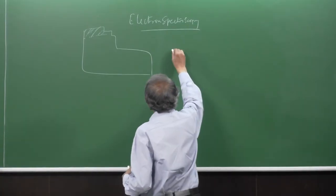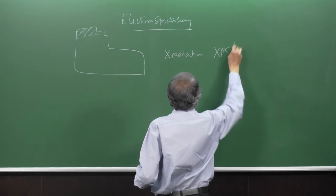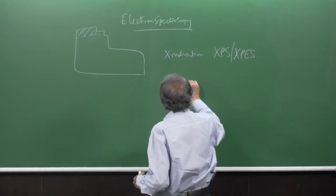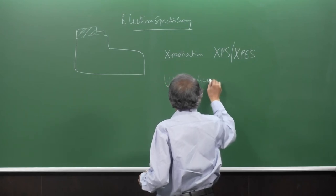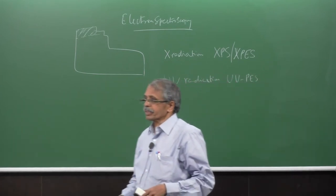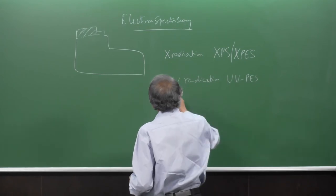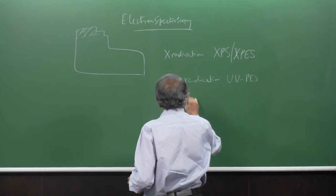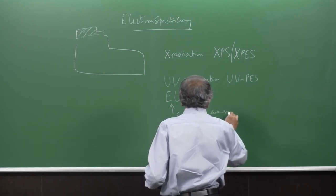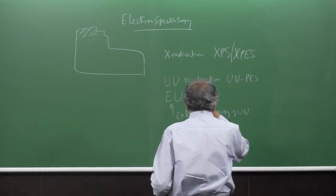If you use X-radiation, this is called XPS — X-ray photoelectron spectroscopy. If you use UV radiation, this is referred to as UPS or UVPES. There is also extreme ultraviolet (EUPS) using the highest energy of UV radiation. Depending on the radiation used, the kind of information obtained will differ — X-radiation reaches core electrons, while UV radiation gives valence-type or lone pair electrons.